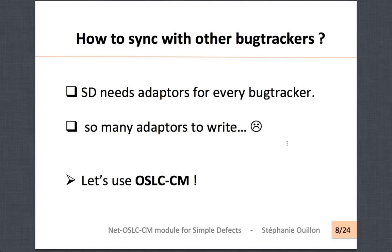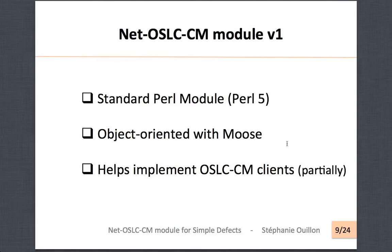Right now in Simple Defects, some adapters have already been written. But for example, I wanted to use Simple Defects with Bugzilla. So my idea — and Olivier's idea, who was my mentor — was to use OSRCCM. So Net OSRCCM is a standard Perl module using object-oriented programming with Moose. In this first version that is integrated into the LIA release, it will help you implement OSRCCM clients partially.